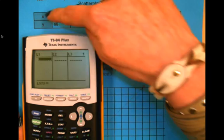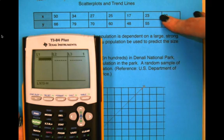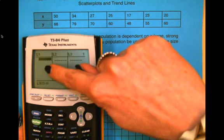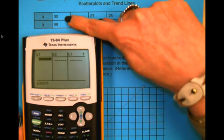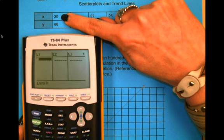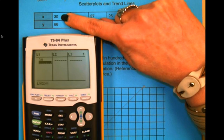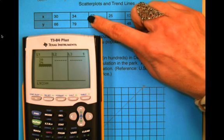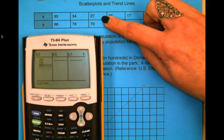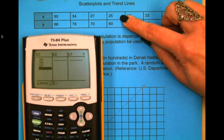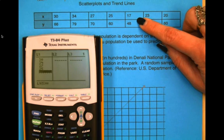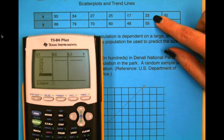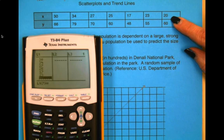I am going to put all of my X values in my list 1. To do that, you just simply type them in. You're going to type in 30 and hit enter, then move across the screen: 34 enter, 27 enter, 25 enter, 17 enter, 23 enter, 20 enter.